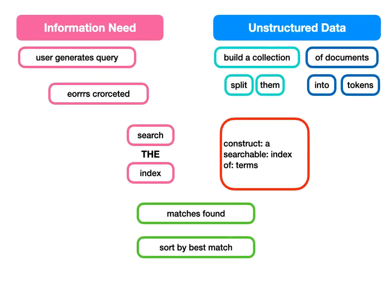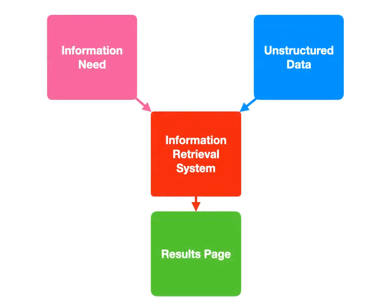So, to recap this diagram: we have two processes — getting our unstructured data into a usable index, and then processing user queries through that index to get the search results we want. You never forget that you are taking two things — the information need and the unstructured data — using a system to combine them, and getting results out the other side.